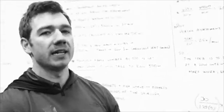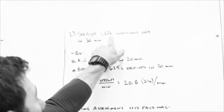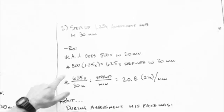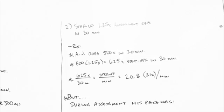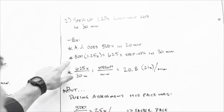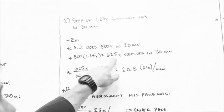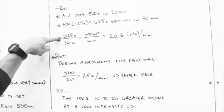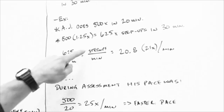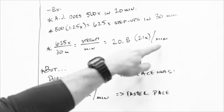Step-ups, we're actually going to do a distance per time or a step-up per time. So it's a little bit easier calculation than what we're used to seeing. So again, step-up 1.25 times assessment reps in 30 minutes. So in our example, let's say AJ does 500 step-ups in 20 minutes. He's not very good at doing step-ups. But anyway, so 500 times 1.25 is 625 step-ups in 30 minutes. So if we take 625 divided by 30, then we're going to get our step-ups per minute. So that equals 20.8 or 21 step-ups per minute.